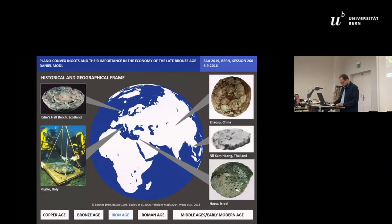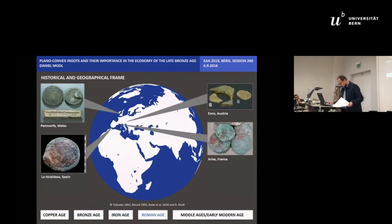In Iron Age we find PCIs in Europe and also in Asia. Also the Romans cast the copper in similar form as documented by ancient copper ingots found in Wales or along the southern shore of France.